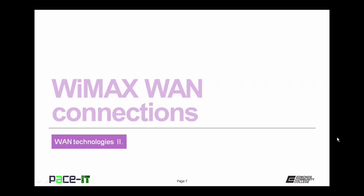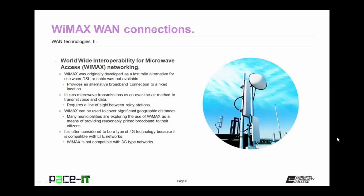WiMAX stands for Worldwide Interoperability for Microwave Access. WiMAX was originally developed as a last-mile alternative when DSL or cable was not available. It can provide an alternative broadband connection to a fixed location. It uses microwave transmissions as an over-the-air method to transmit voice and data, and does require line of sight between relay stations. WiMAX can cover significant geographic distances, and many municipalities are exploring its use as a means of providing reasonably priced broadband to their citizens without having to wire every household.